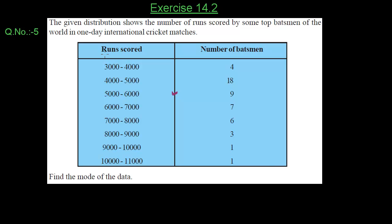In this table, there are two columns. First column is runs scored by batsman and the second column is number of batsmen which is our Fi.